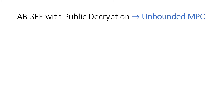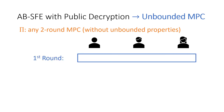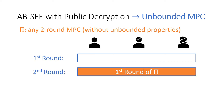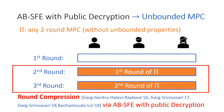Now, assuming we already have ABSFE with public decryption, how do we build an unbounded MPC protocol? Our starting point is any two-round MPC protocol pi — we do not require any additional properties of pi. We use it to build the unbounded MPC protocol. Our starting point is in fact a three-round protocol, where in the first round all parties do nothing. Then in the second and third rounds, all parties execute the original protocol pi.